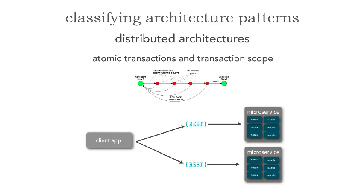The last thing we have to deal with is transactionality. In monolithic applications, we take for granted the ability to do update, update, delete, insert — and on error, rollback. When we're propagating through remote access protocols, we can't feasibly propagate a transaction as well. Even if there are technical loopholes to propagate a transaction, we wouldn't want to anyway in a distributed environment. We have to deal with transactionality in terms of BASE transactions — Basic Availability, Soft state, and Eventual consistency — as opposed to the traditional ACID transactions: atomicity, consistency, isolation, and durability that we're used to using.